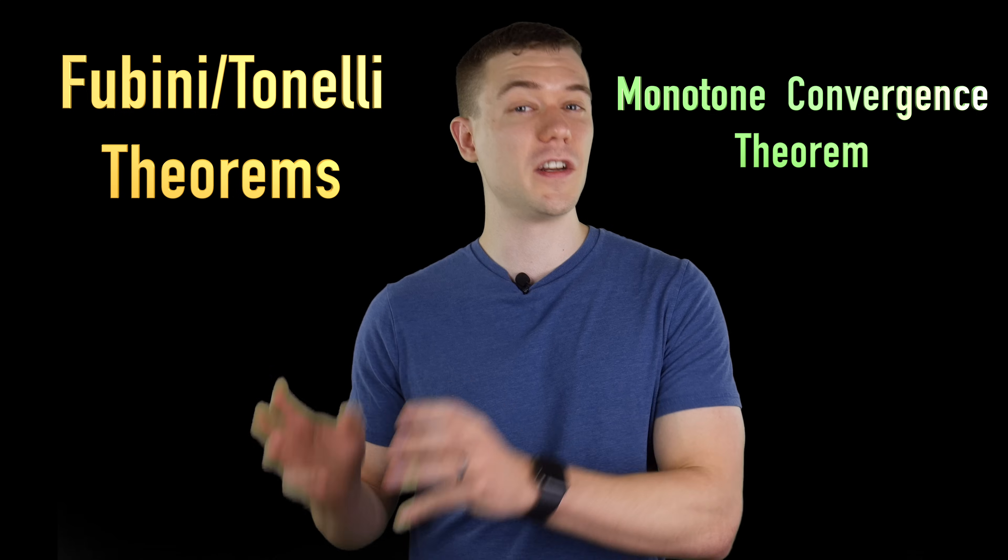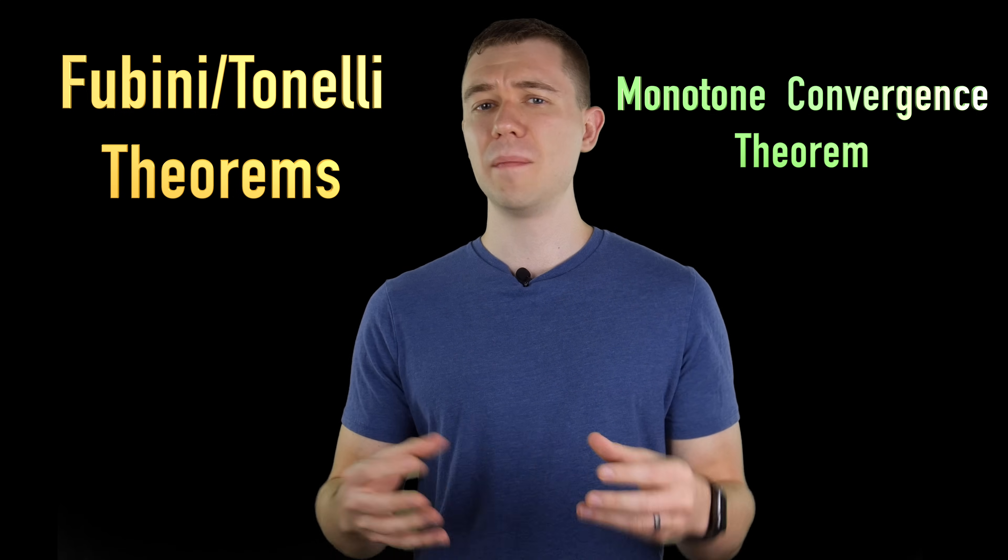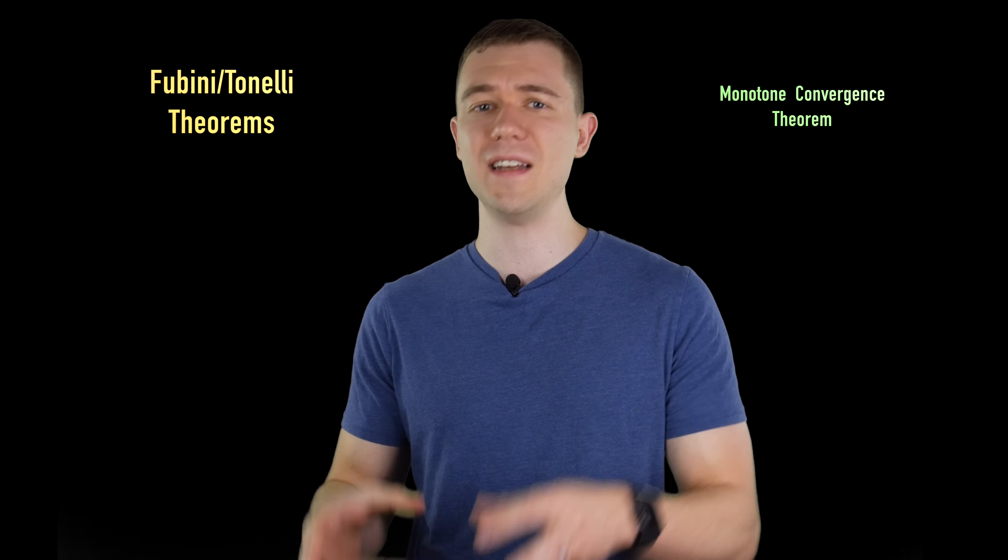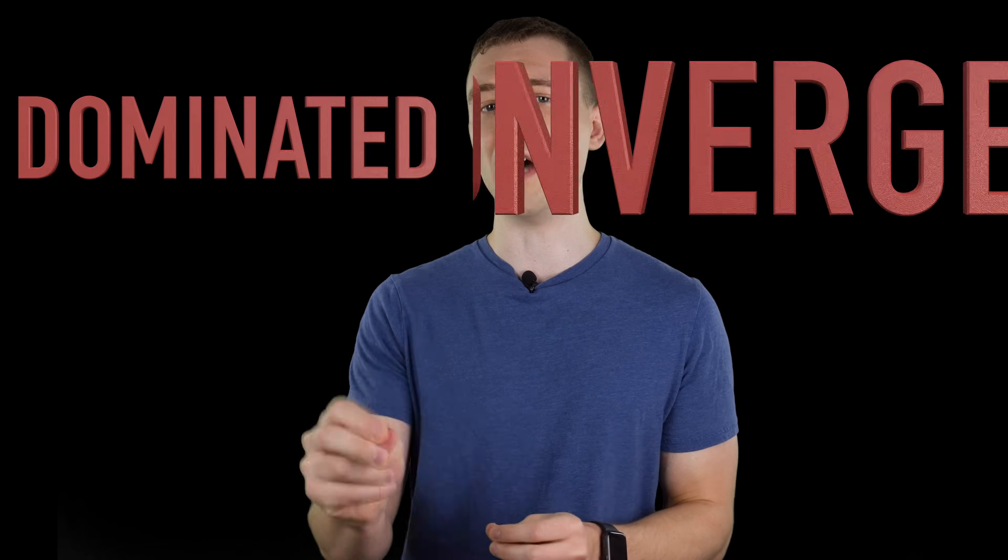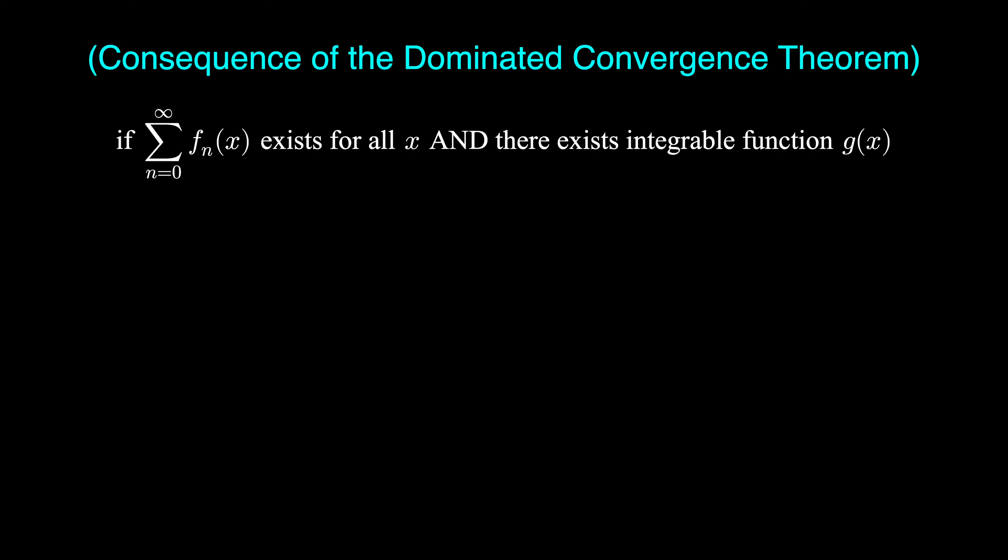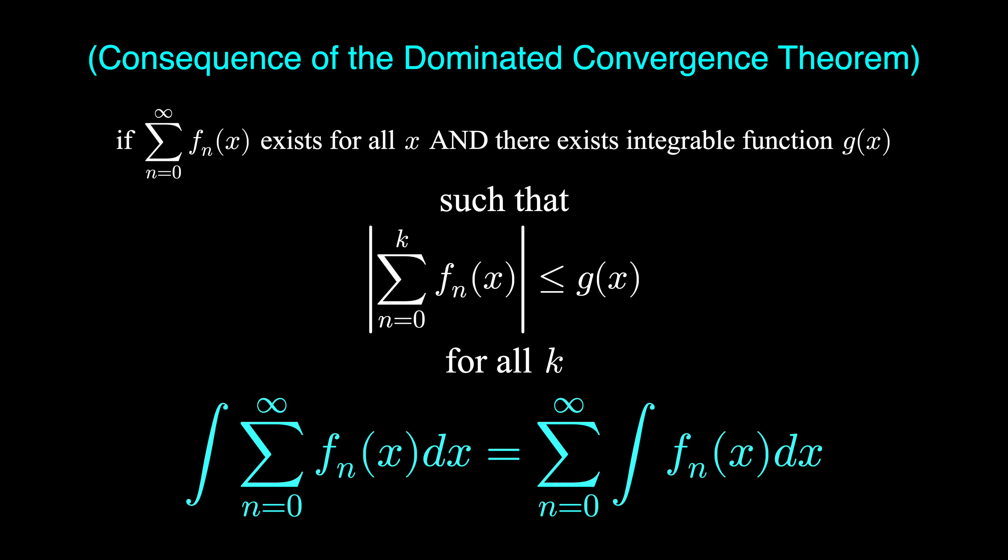Actually there are quite a few theorems that allow us to interchange the discrete sum and the continuous sum, but I think the easiest to understand and apply is the so-called dominated convergence theorem. The dominated convergence theorem essentially says that if our discrete sum exists for all x and there's some other integrable function g of x, such that the absolute value of our finite sum is less than or equal to g of x for every value, then we get what we want and we can interchange those two summation symbols.